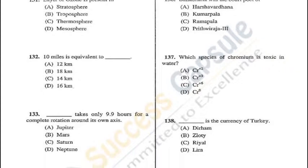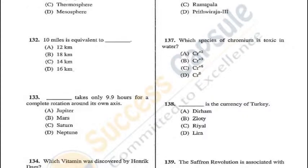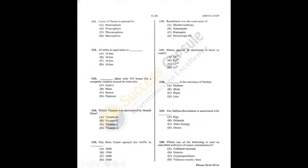Question 132: 10 miles is equivalent to approximately 16 kilometers — D is the answer. Question 133: Jupiter takes only 9.9 hours for a complete rotation around its own axis — A is the correct answer. Q131 = A, Q132 = D, Q133 = A.